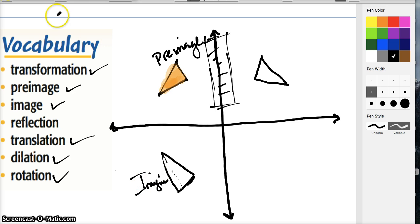Those are all the types of transformations: preimage, image, reflection, translation, dilation, and rotation. Let's begin some examples.